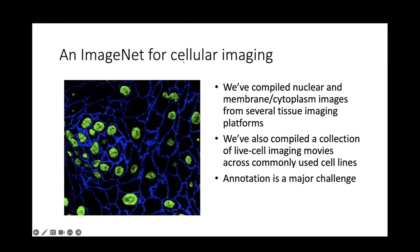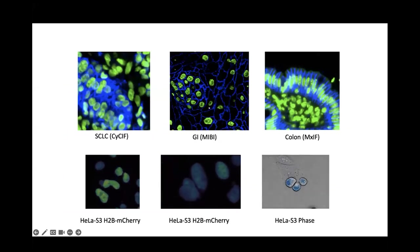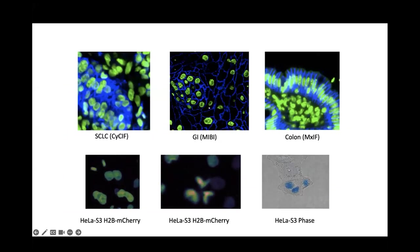To enable the construction of these computational primitives, our lab has been working for several years to create an ImageNet for cellular imaging. We've compiled a large collection of tissue images that include both a nuclear stain and a membrane or cytoplasmic stain, as well as a similar collection of live cell imaging movies collected with phase and fluorescence microscopy across commonly used cell lines. The largest challenge ahead of us is annotation — including the difficulty of labeling each image and the problem of scale, having too many images to label.